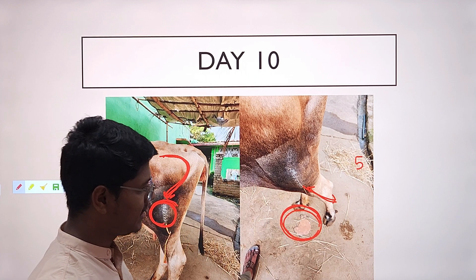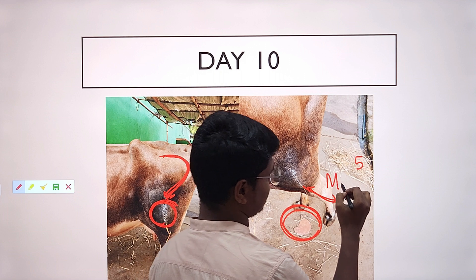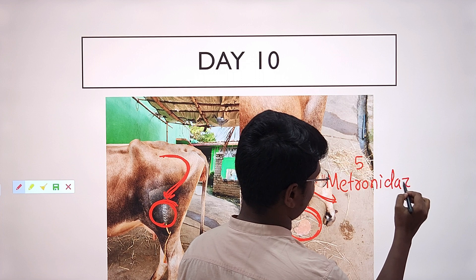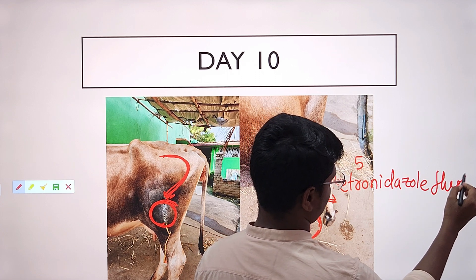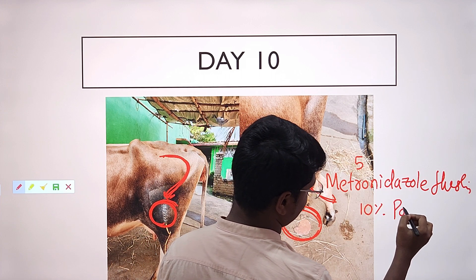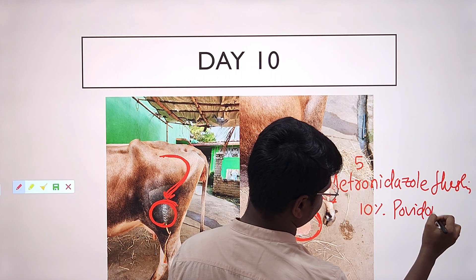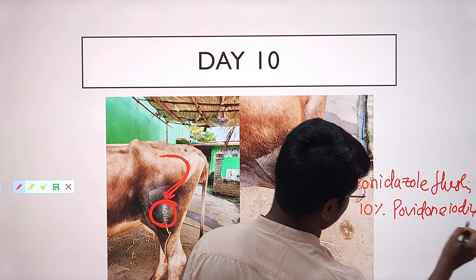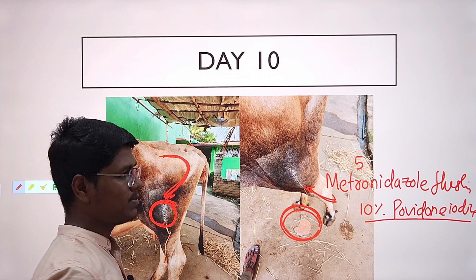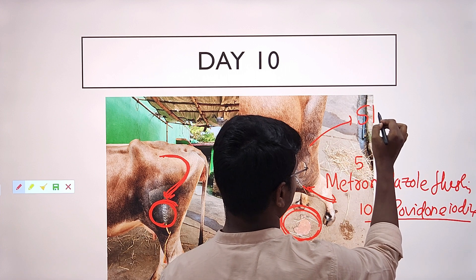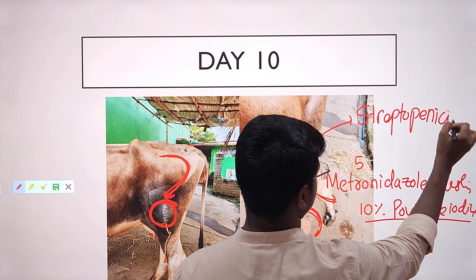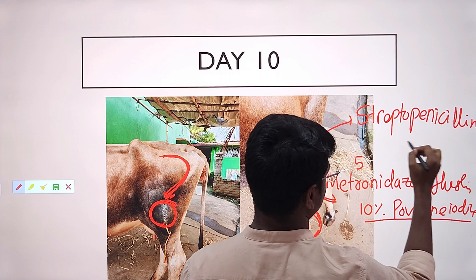I removed the thick pus and then performed metronidazole flushing. After that I did flushing with 10% povidone iodine plus 10% piperazine solution. I also prescribed streptomycin-penicillin for three days.